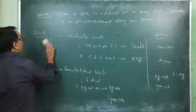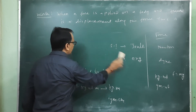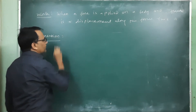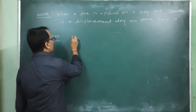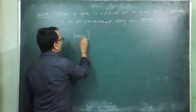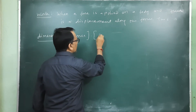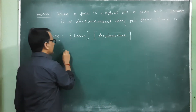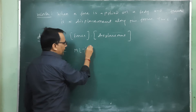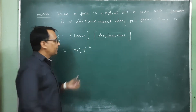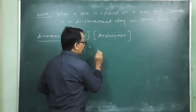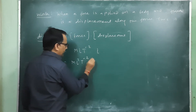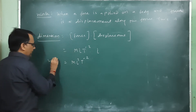The dimension of work equals the dimension of force multiplied by the dimension of displacement. The dimension of force is MLT⁻², and displacement is L, so the dimension of work is ML²T⁻².